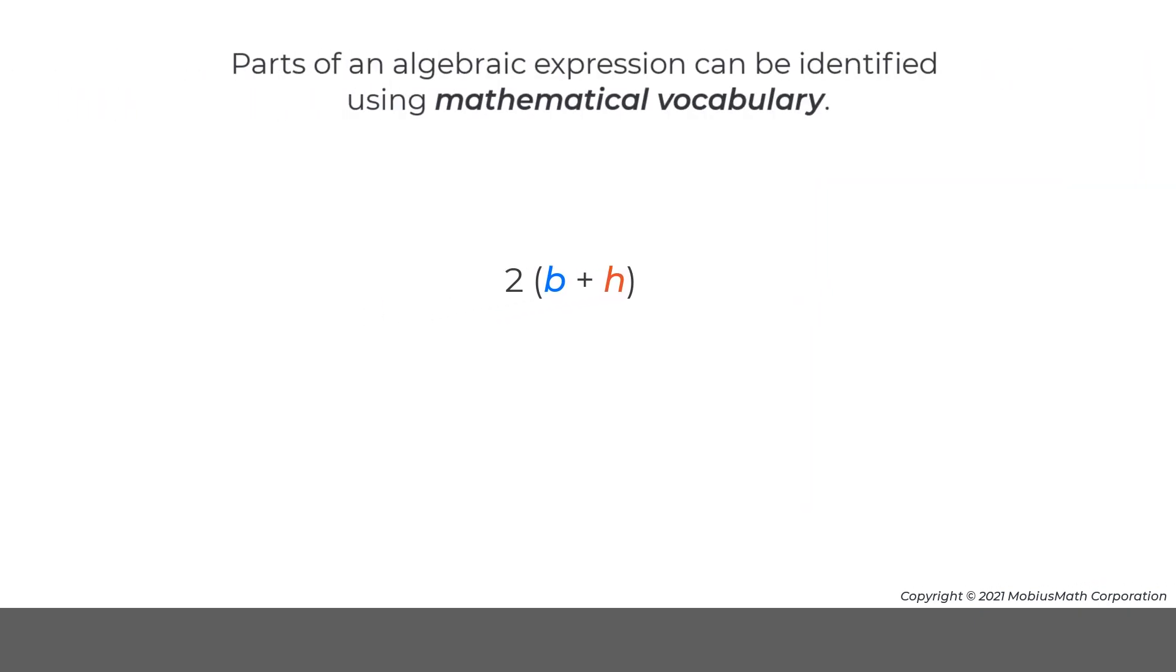Parts of an algebraic expression can be identified using mathematical vocabulary. For example, the expression for the perimeter of a rectangle is the product of two factors, 2 and the quantity of b plus h.